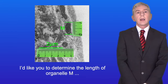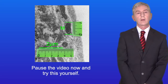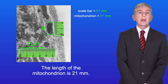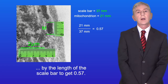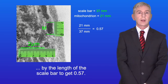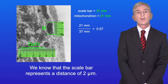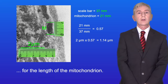Here's one for you to try. Determine the length of organelle M, which is a mitochondrion. The length of the scale bar is 37 millimeters and the length of the mitochondrion is 21 millimeters — notice how we're keeping the units the same. We divide 21 by 37 to get 0.57, meaning the mitochondrion is 0.57 times the length of the scale bar. Since the scale bar represents 2 micrometers, multiplying 0.57 by 2 gives us 1.14 micrometers for the length of the mitochondrion.